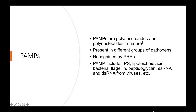RIG-like receptors are mainly formed of two N-terminal caspase recruitment domains or CARD domains and an RNA helicase domain. They mainly induce secretion of antiviral cytokines such as interferons and mainly modulate antiviral immune response. Now let's understand about PAMPs. PAMPs or pathogen-associated molecular patterns are mainly molecular signatures recognized by pattern recognition receptors. They are polysaccharide and polynucleotide in nature and include LPS, lipoteichoic acid, bacterial flagellin, peptidoglycan, single-stranded RNA, and double-stranded RNA from viruses.